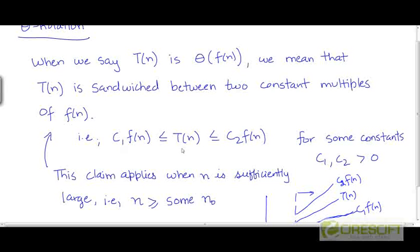6n³ will eventually be greater than or equal to c₁ times n² for any value of c₁ we may choose. But it's going to be impossible to find a value of c₂ for which the second half of this inequality holds.